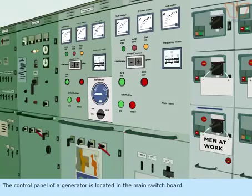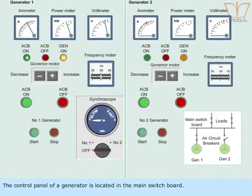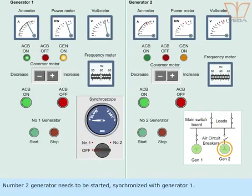The control panel of a generator is located in the main switchboard. Assume that number 1 generator is running on load. Number 2 generator needs to be started, synchronized with generator 1.